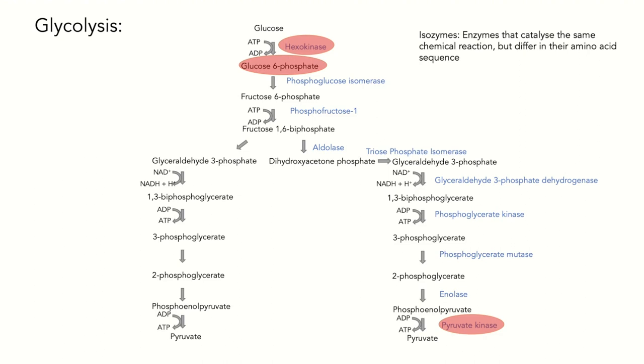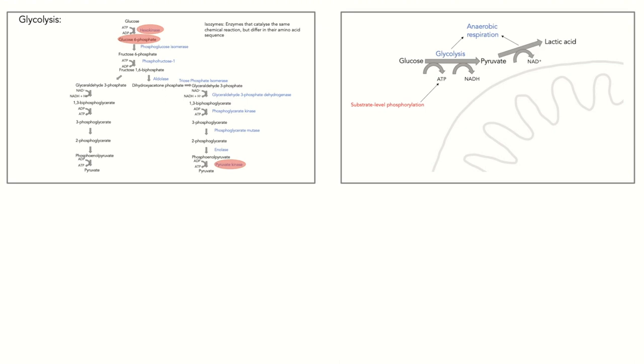However, it is not just changes in glycolysis itself that contribute to the Warburg effect. We also must consider the bigger picture. As I said before, in healthy tissue, energy production via glycolysis, so-called anaerobic respiration, occurs in tissues with low oxygen levels, hence hypoxia.